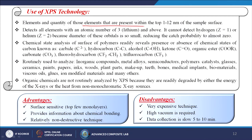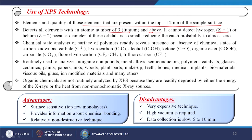XPS detects elements and their quantities present within the top 1 to 12 nanometers of the sample surface. It detects all elements with atomic number 3 (lithium) and above — hydrogen and helium cannot be detected because the diameter of their orbitals is so small, reducing the catch probability to almost zero. Chemical state analysis of polymer surfaces readily reveals the presence or absence of chemical states of carbon, including carbide, hydrocarbon, alcohol, ketone, organic ester, carbonate, fluorohydrocarbon, or trifluorocarbon.